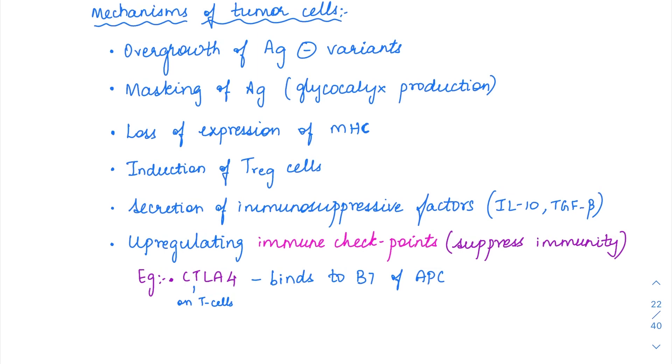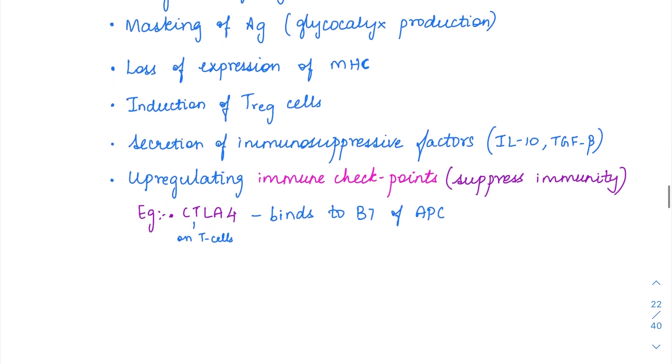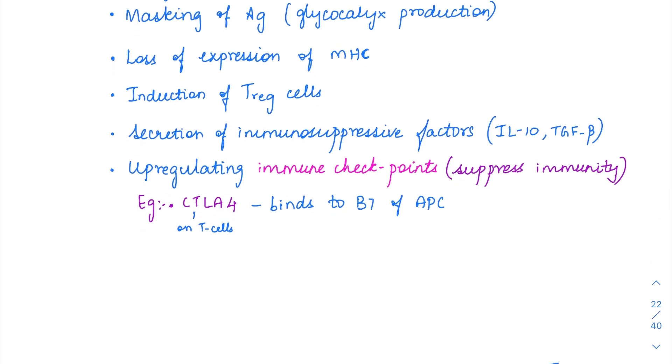Firstly, only when the antigens are present can they be detected by the lymphocytes. The tumor cells are going to develop antigen negative variants. They are going to either mask their antigen with the help of producing some glycocalyx kind of thing, so the antigens are masked and cannot be detected by the lymphocytes. Either that or they will produce antigen negative variants itself, a particular clone of tumor cells which are going to be antigen negative, and also loss of MHC expression.